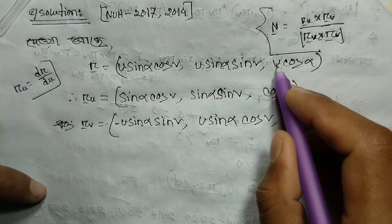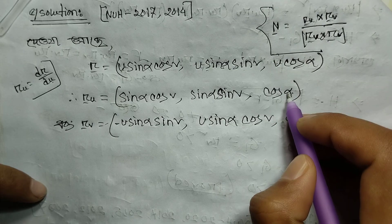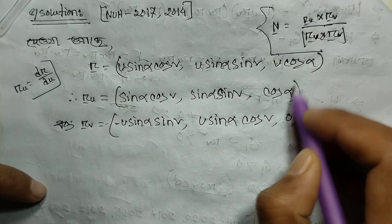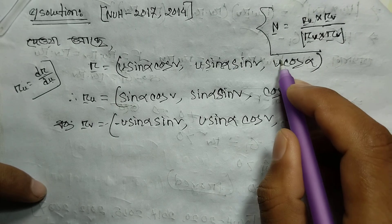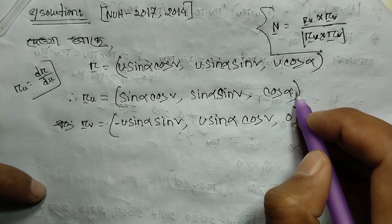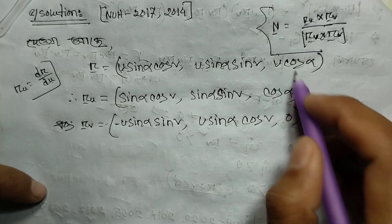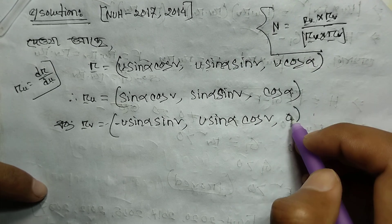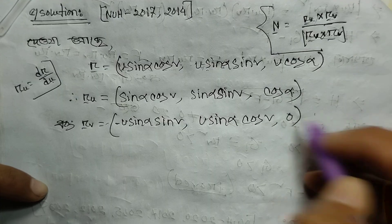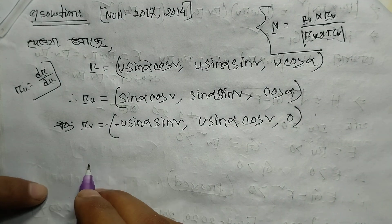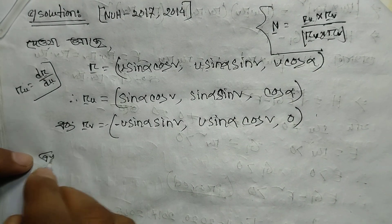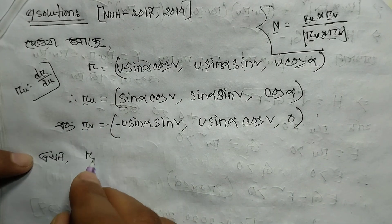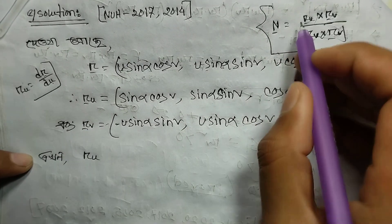With alpha held constant, u sinα remains, and we differentiate the trigonometric part inside with respect to v.